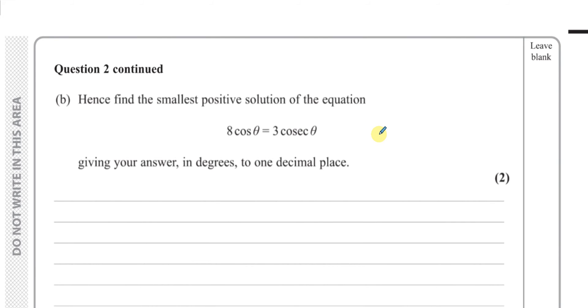Okay. Hence find the smallest positive solution of the equation 8 cos θ equals 3 cosec θ. So we just worked out that this can be rewritten as the sine of 2θ equals 3 quarters. Okay, so we have to solve this equation and find the smallest positive solution.